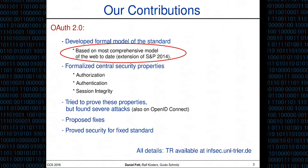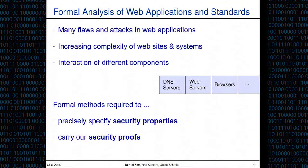Let's start with the generic model our work is based on. Why do we need formal treatment for web security at all? There have been many flaws and attacks discovered over the last years in web applications and web infrastructure. One reason is that web applications are increasingly complex, and the web itself involves complex interactions between different components like DNS servers, web servers, and web browsers. Formal methods help us precisely think about web security, specify security properties, and carry out security proofs.